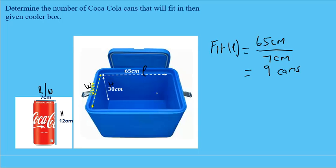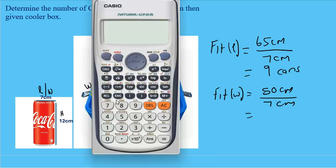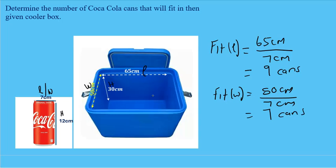How many cans fit in width: take the width of the cooler box, 50 centimeters, and divide by the width of the can, 7 centimeters. This gives 7.14, which we round down to seven cans — that last can won't fit. For height: take the height of the cooler box, 30 centimeters, and divide by the height of the can, 12 centimeters, giving 2.5.